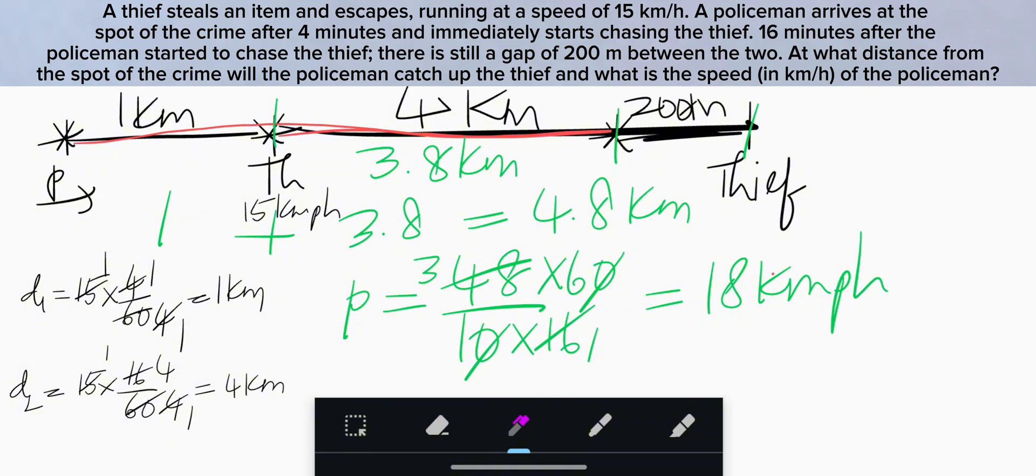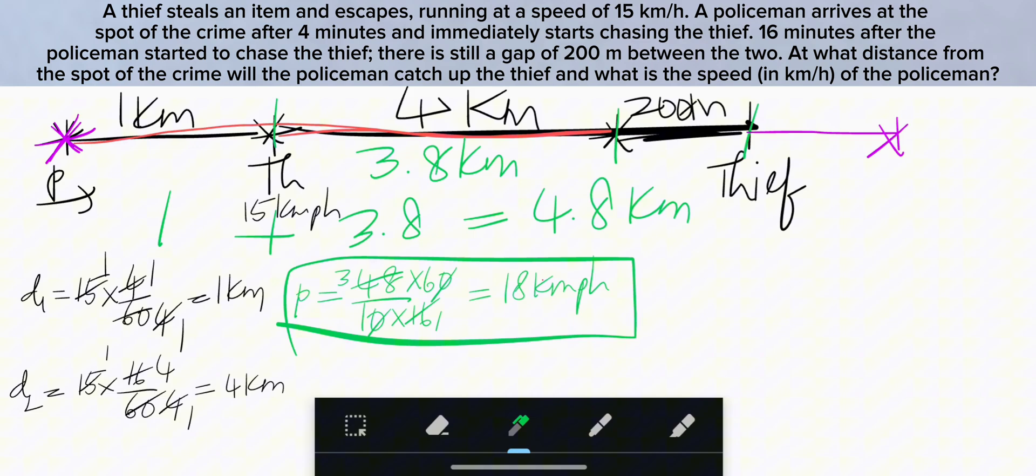And also we need to find the distance from the spot of the crime to the thief catch-up point. Let me put the box to the speed of the police. Now time taken by the thief to cover this portion of distance is equal to the relative time taken by thief and police to cover 200 meters.